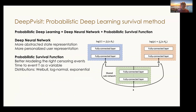To model the delta effect, we propose the probabilistic deep learning survival method. It has two key components. The base component is a deep neural network to provide more abstract state representations and also give more personalized user representations. The other component is the probabilistic survival function. We can choose custom distributions learned from the data and use the Weibull survival function to better model the right censoring events for predictions.